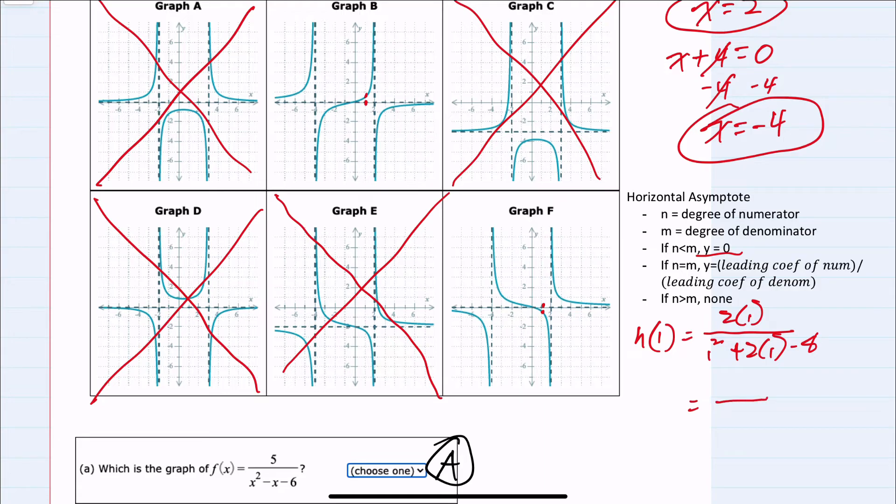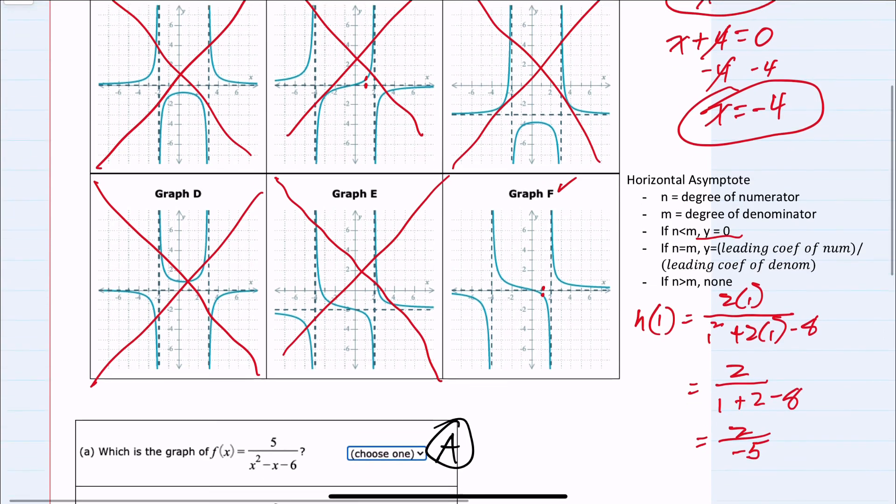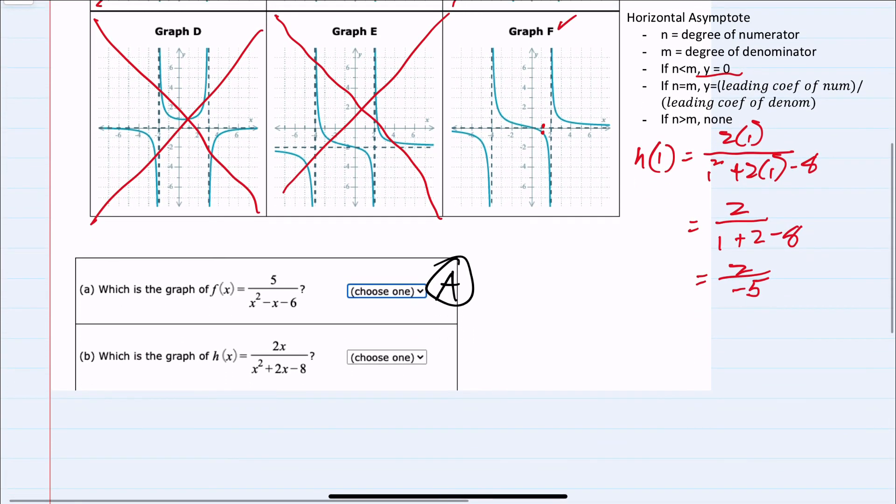Simplifying from here, the numerator, two times one is two. In the denominator, one squared is one plus two times one is two minus eight. Gives us two over a minus five. So our y value here is negative. When we plug in x equals one, we should get a negative value. That happens for f, but does not happen for b. So we've eliminated all possibilities except for f. So h of x is graph f.